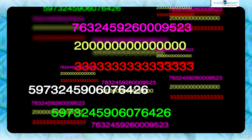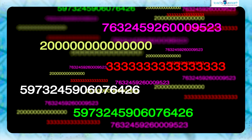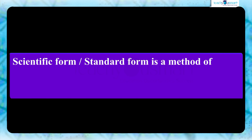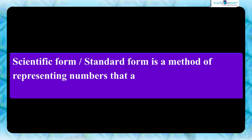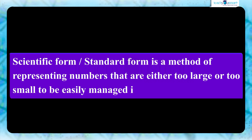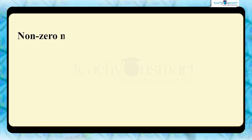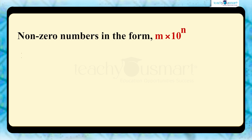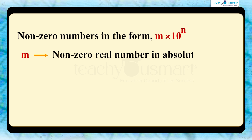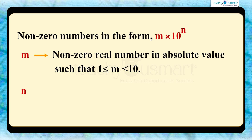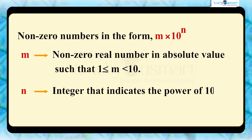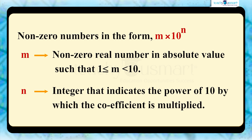Expressing these numbers in scientific form makes it much easier to work with them. Scientific form, also known as standard form, is a method of representing numbers that are either too large or too small to be easily managed in their original form. In scientific notation, non-zero numbers are written in the form m multiplied by 10 raised to n, where m is a non-zero real number such that 1 ≤ m < 10, and n is an integer that indicates the power of 10 by which the coefficient is multiplied.